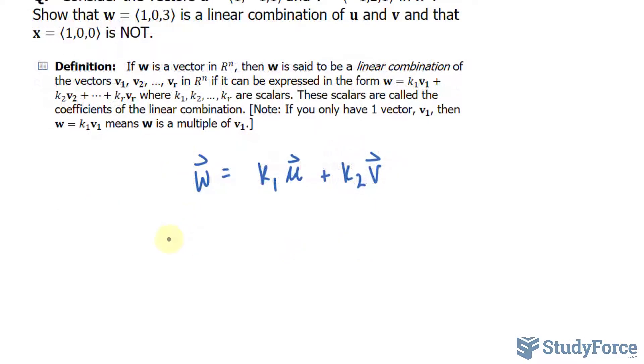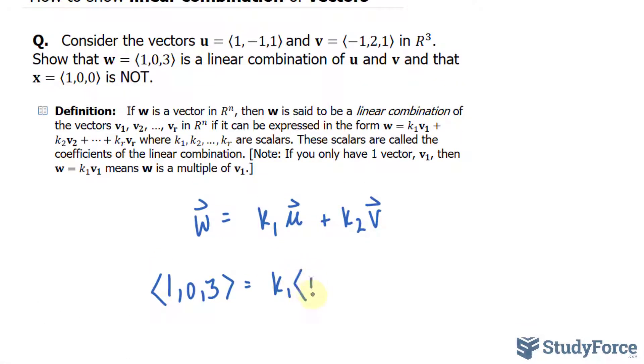So in place of w, I'll write down (1, 0, 3). k₁ times the components of u, which are (1, -1, 1), plus k₂ times (-1, 2, 1).